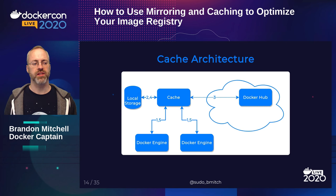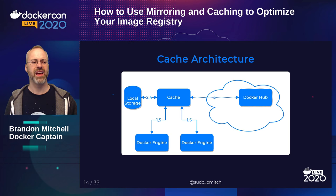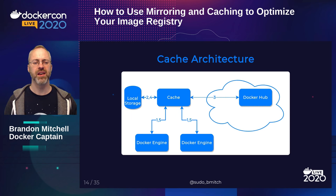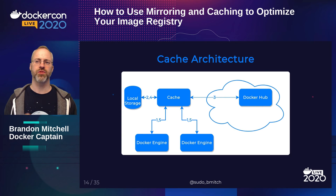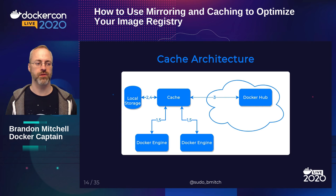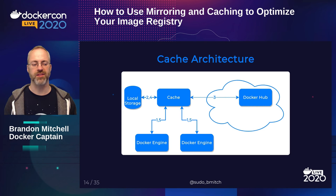The architecture is: your Docker engine talks to the cache, and the cache talks to Docker Hub only if it doesn't already have that image in local storage. The cache always checks for the upstream manifest — what layers are associated with this tag — and if it has those layers locally, it returns them without hitting Docker Hub. That helps with potentially stale images, but it's also a downside we'll get into.